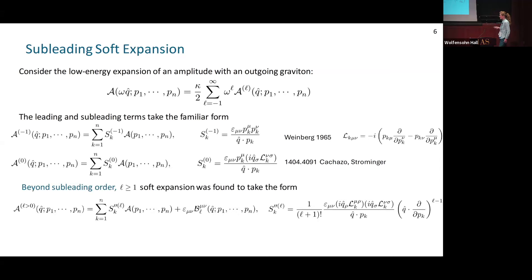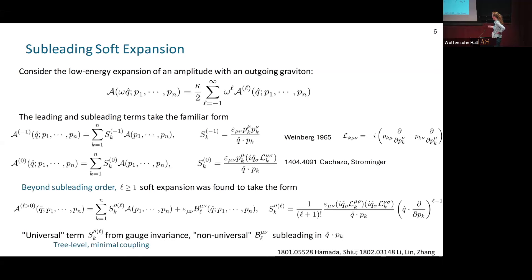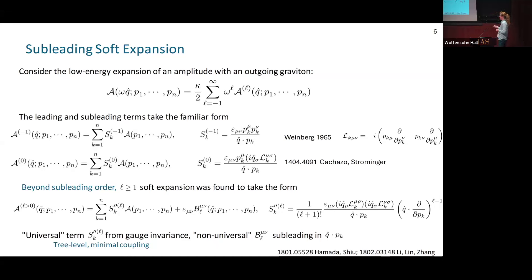Beyond subleading order, the soft expansion was found by various authors to take a form with one term that is a soft factor multiplying the original amplitude — in analogy with leading and subleading cases — plus an additional non-universal term, at tree level with minimal coupling. At sub-sub-leading order there is a small list of higher-dimension operators that correct this, but beyond sub-sub-leading order the structure of the non-universal term is not well understood. The soft factor S-double-prime involves angular momentum generators and powers of the operator q-hat dot partial-p, and the non-universal terms are subleading in q-hat dot p.